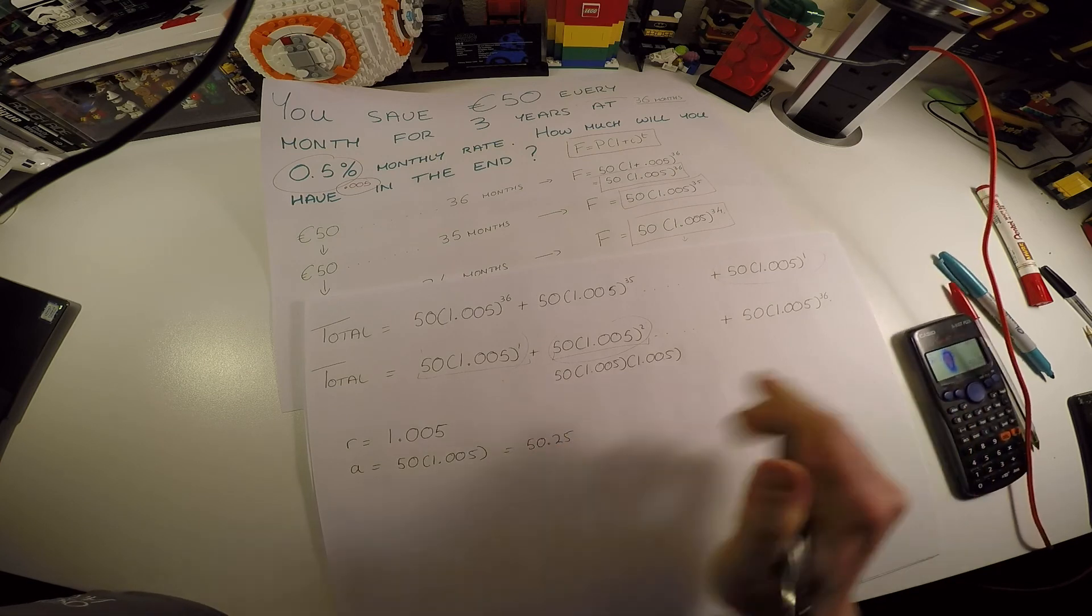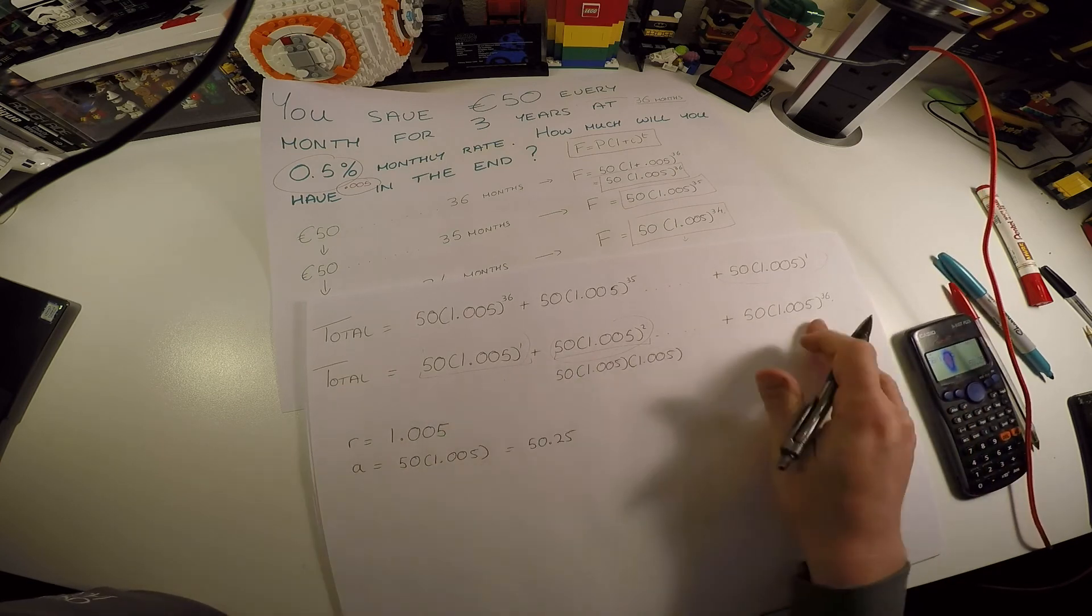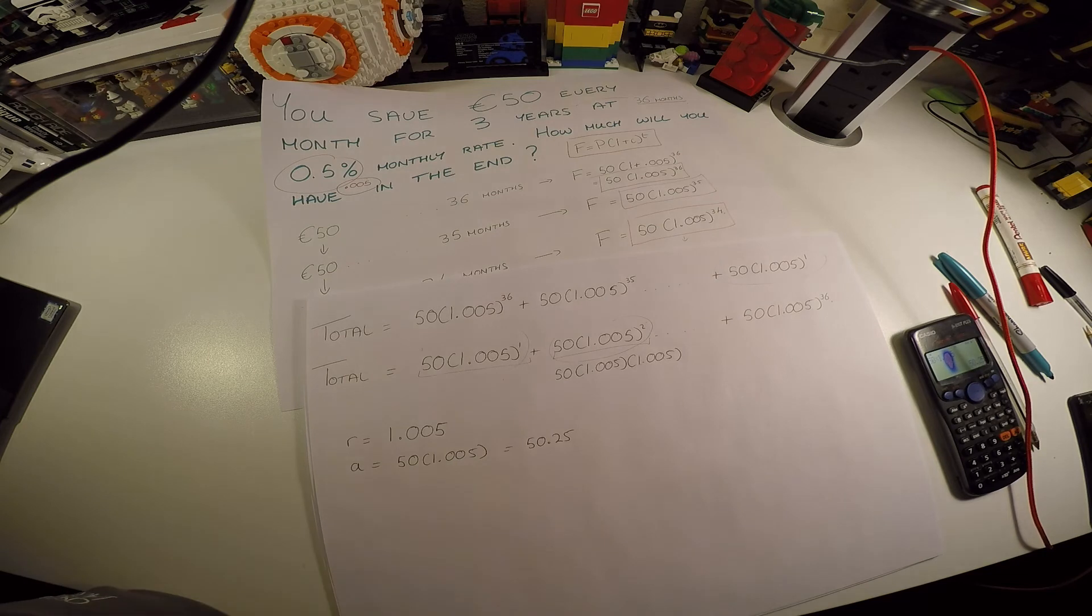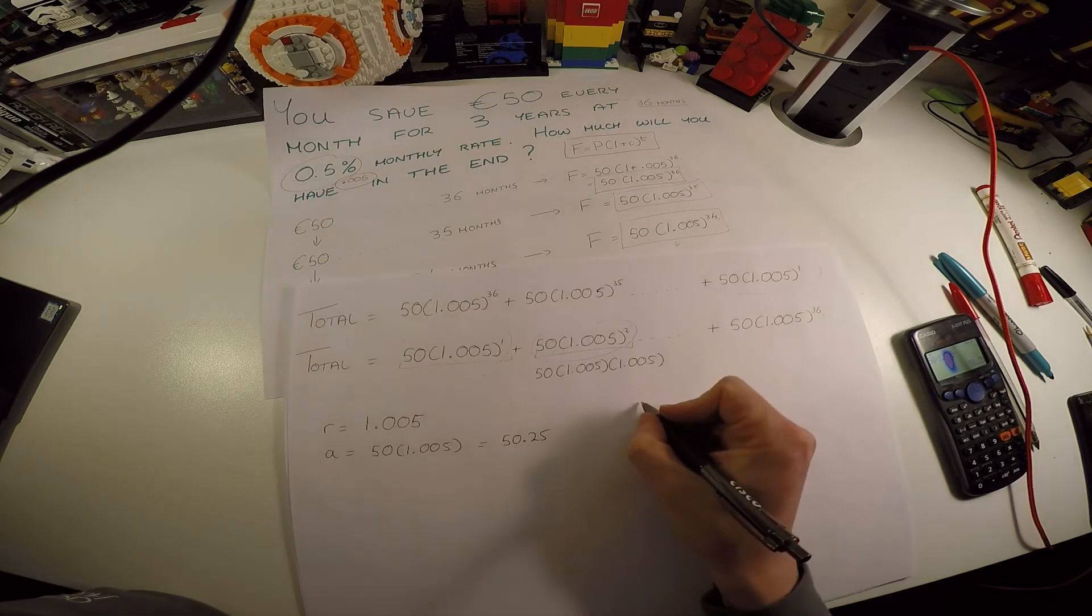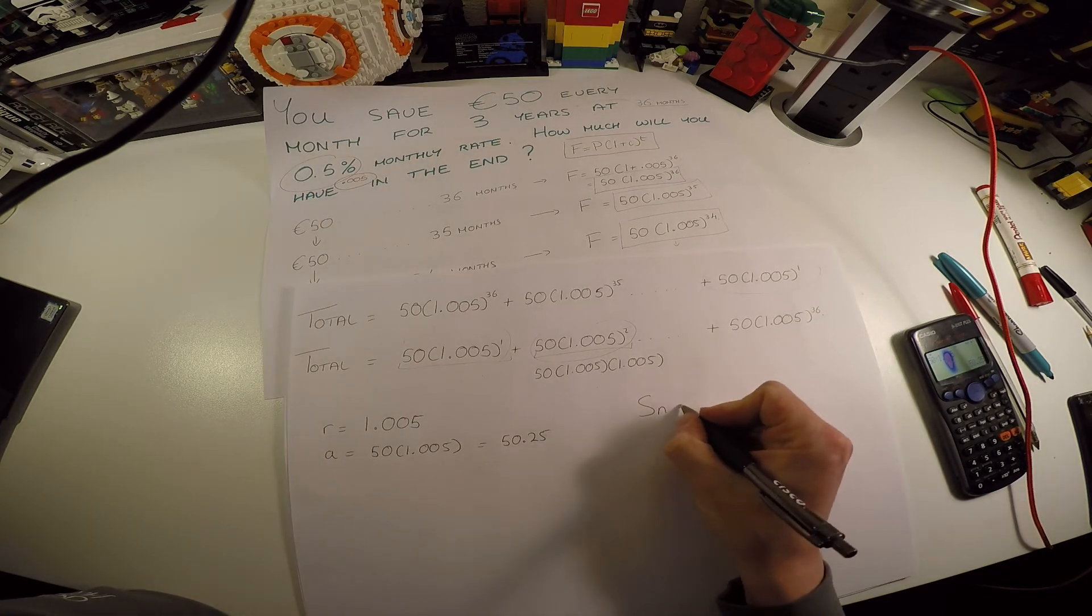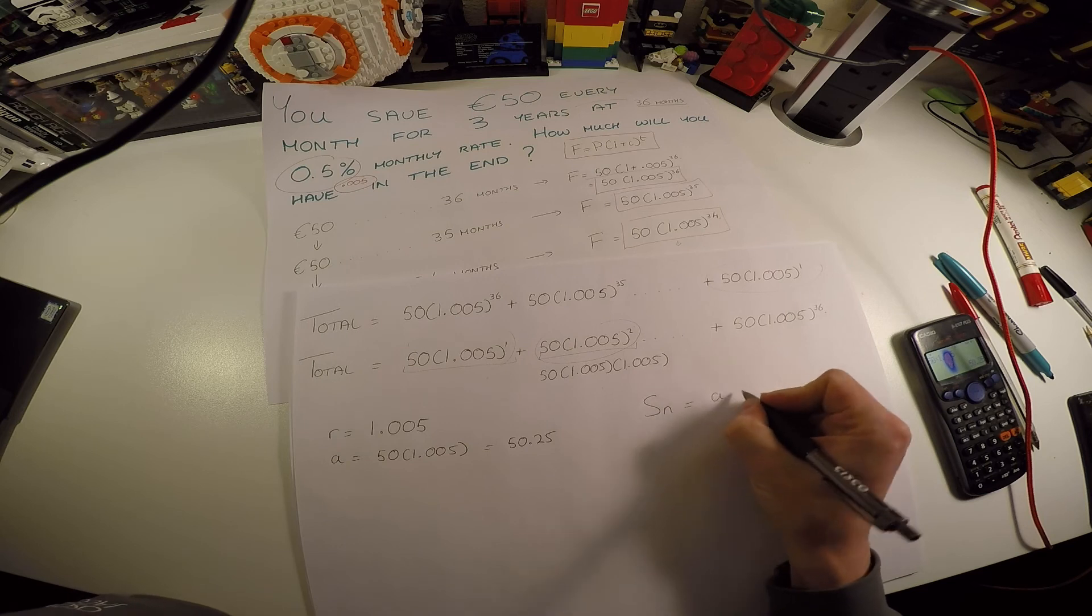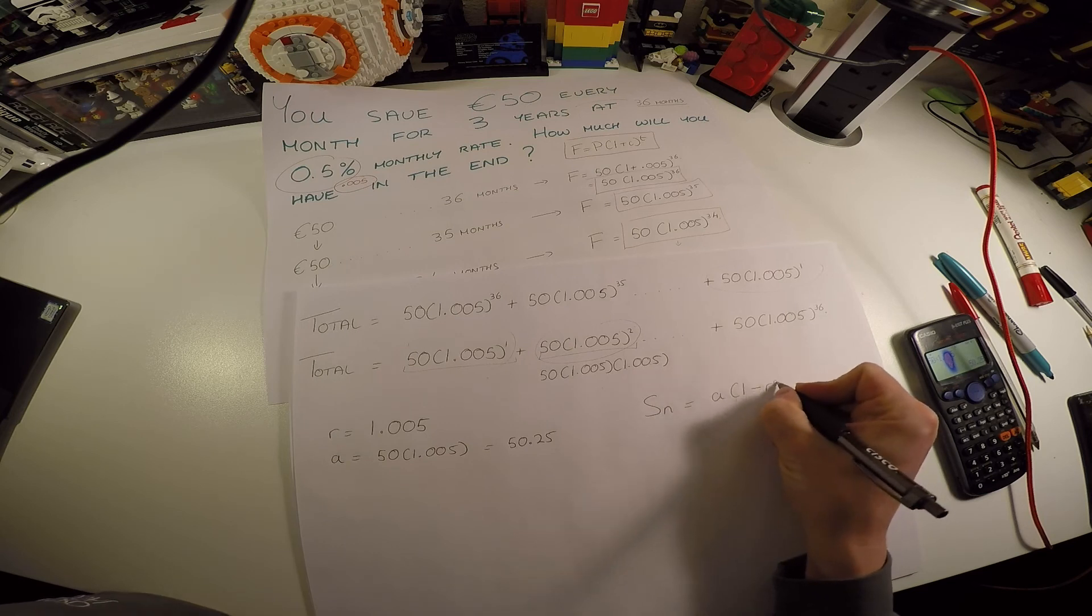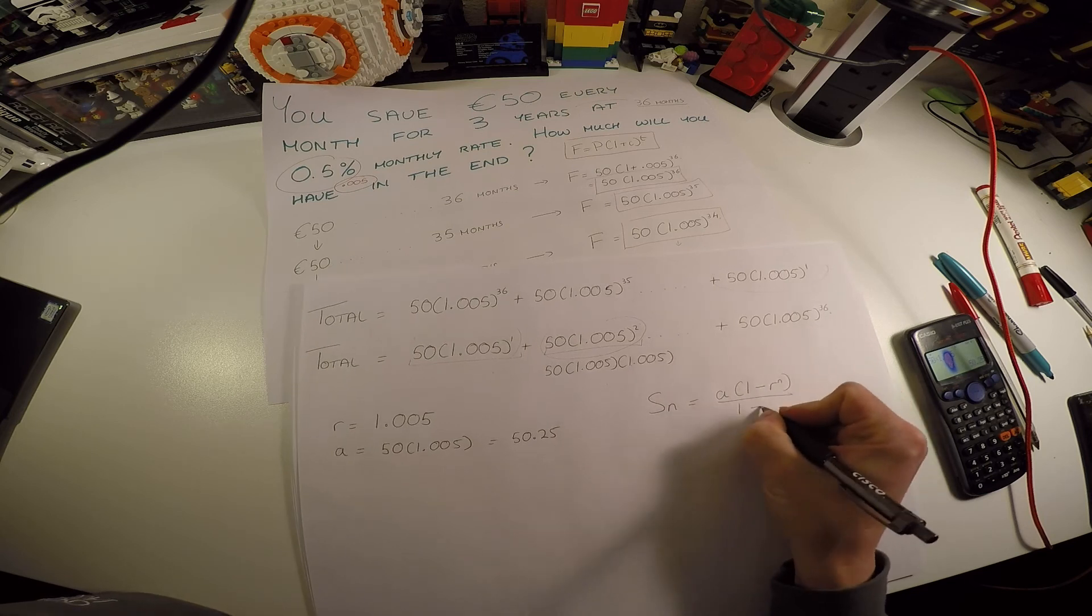Since we have a ratio which is constant throughout all the terms, and we know our first term and we know all the terms, we can employ the geometric series formula, which is a times (1 minus r to the n) over (1 minus r).